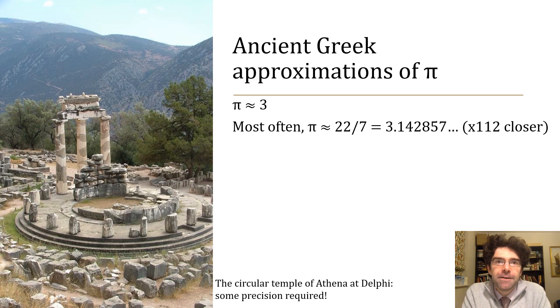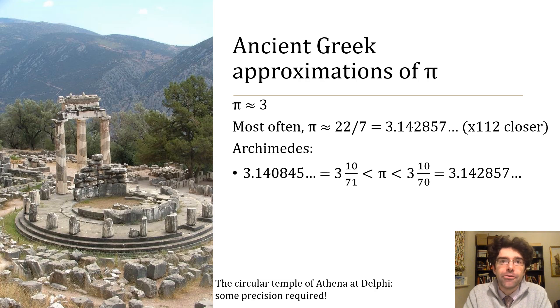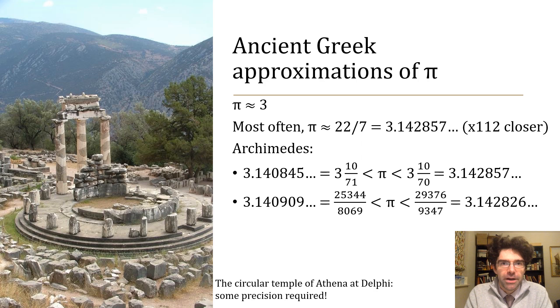Archimedes figured out that that was a little bit on the high side, π is less than that, and he also found a fraction that π is more than. The famous version of his result is that π lies between 3 plus 10 over 71 and 3 plus 10 over 70, which is 22 over 7 again. In fact the method we're going to look at proves something slightly more precise but with less memorable fractions. And we're told that in a lost work Archimedes did even better with finding a fraction that is just a tiny bit above π.